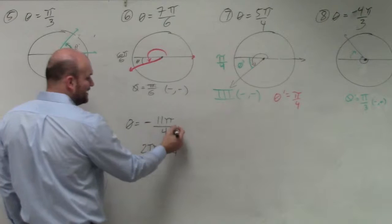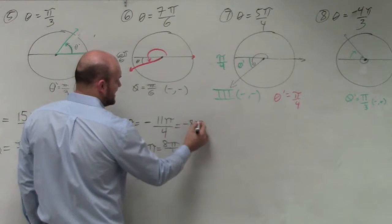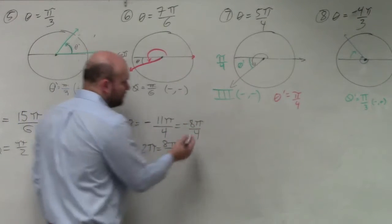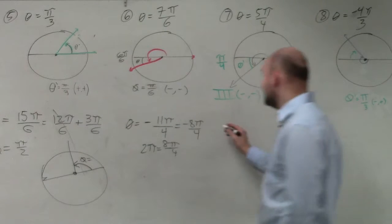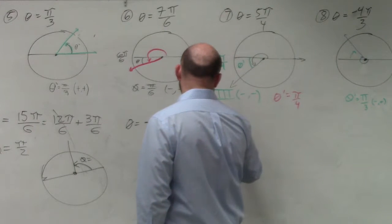However, we're dealing with the negative. So I'm going to rewrite this as negative 8π over 4, plus what is going to give me 11π? Plus negative 3π over 4.